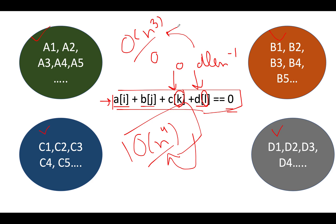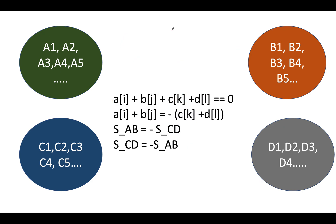Can we improve it further? The answer is yes — by using maps. The time complexity for this approach will be O(n^2). Let's reiterate the mathematical formula: a[i] + b[j] + c[k] + d[l] = 0. I simply move the c and d terms to the right-hand side. The updated formula becomes: a[i] + b[j] = -(c[k] + d[l]).